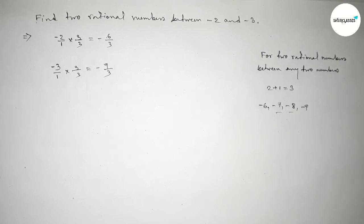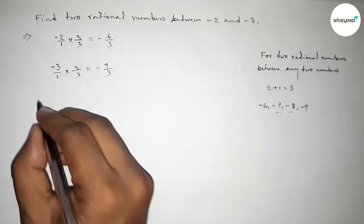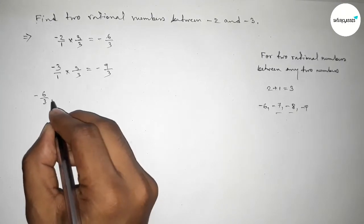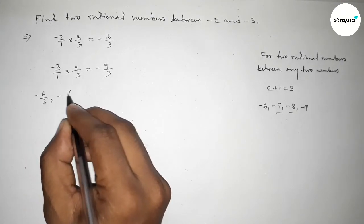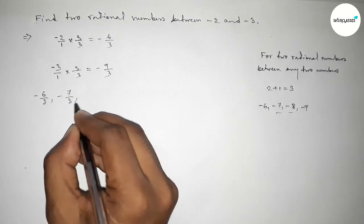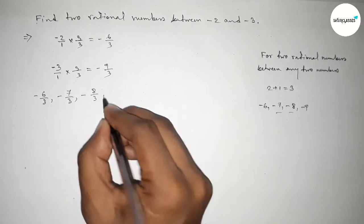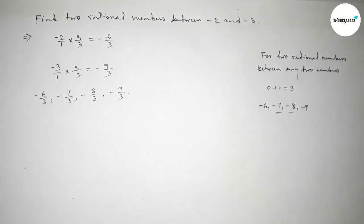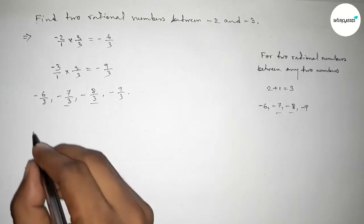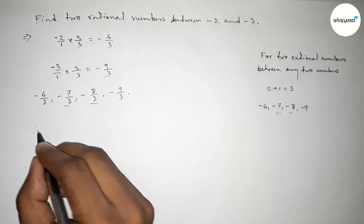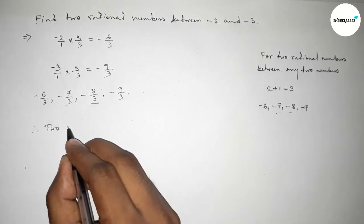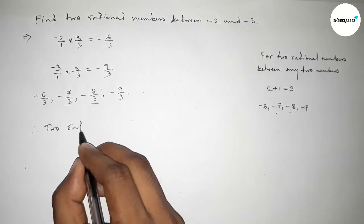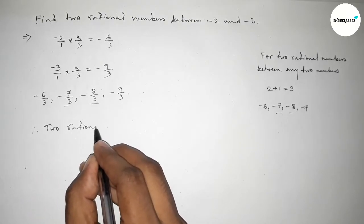These are the two negative integers. Now write down all the rational numbers here: minus 6 over 3, minus 7 over 3, minus 8 over 3, minus 9 over 3. And among these, the two required rational numbers between minus 2 and minus 3 are minus 7 over 3 and minus 8 over 3.